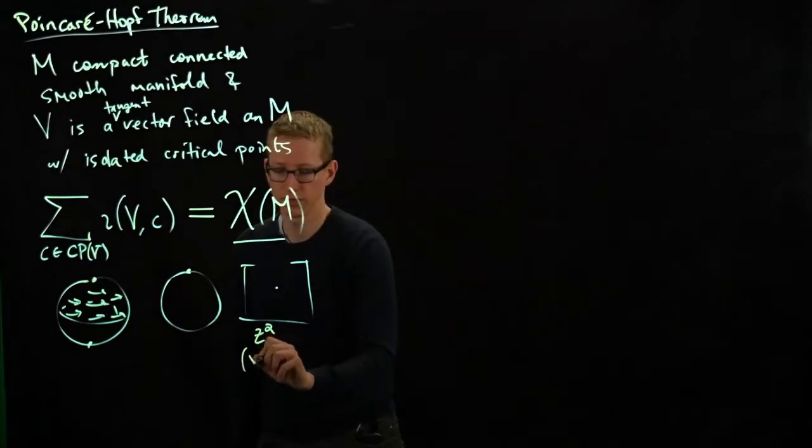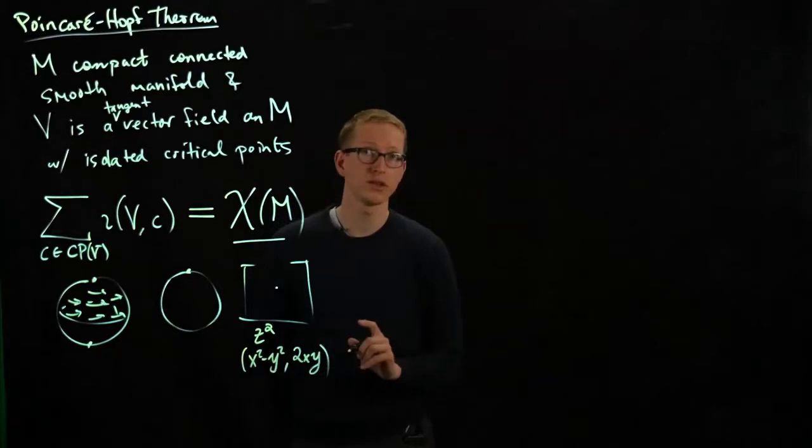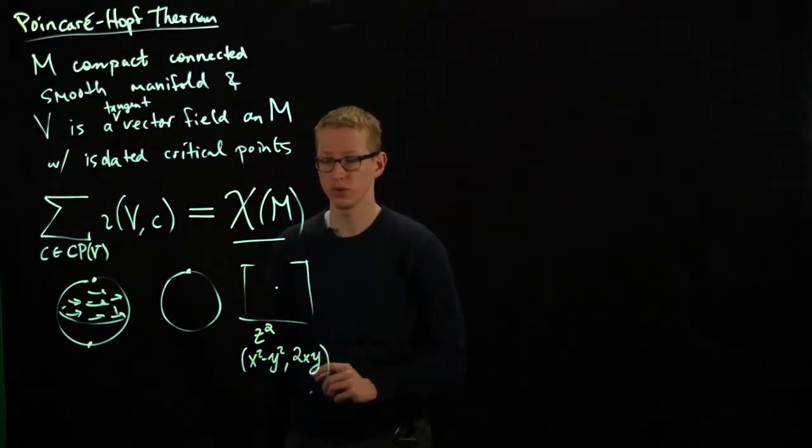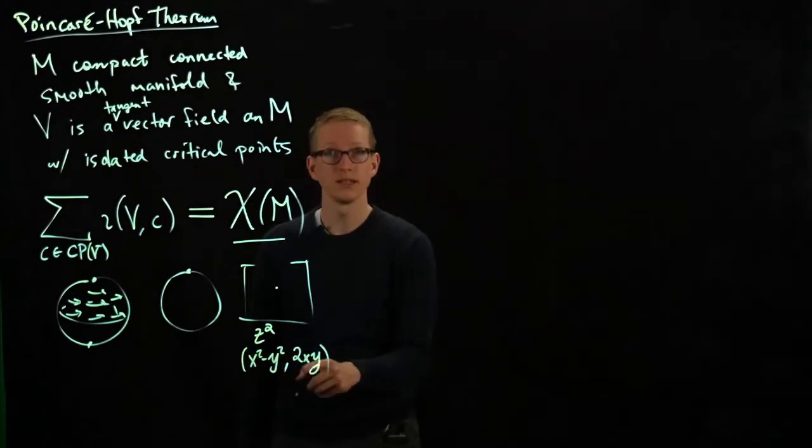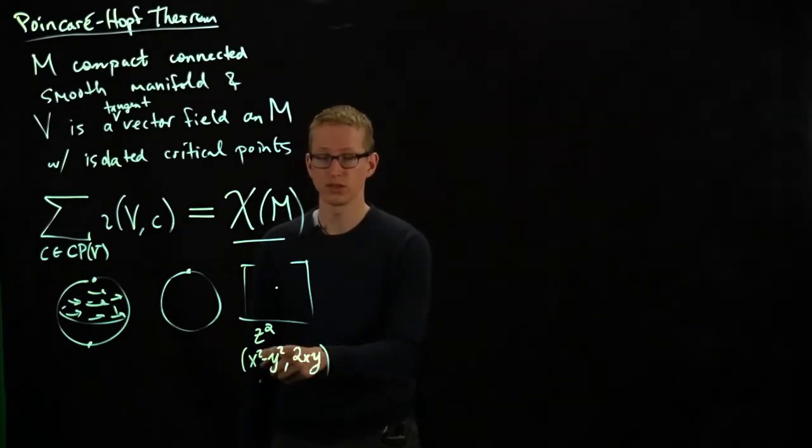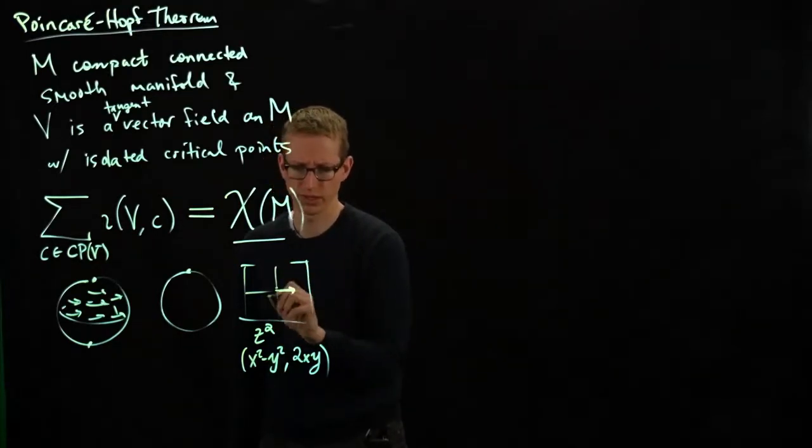And z here is the complex number, so if you take its x and y coordinates, z squared actually looks like the function x squared minus y squared, 2xy, which is actually a vector field we've seen several times in this course, but I never mentioned the relationship between complex numbers. And this vector field essentially is just describing the square.